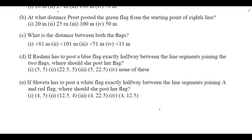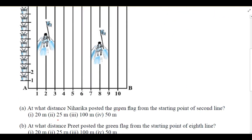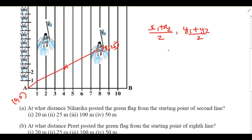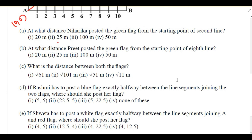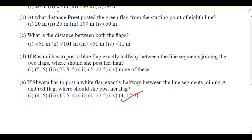Last question: if Sheda has to post a white flag exactly halfway between the line segment joining A and the red flag, where should she post it? The red flag is posted by Pre at (8, 25). The coordinate of A is (0, 0). Using the midpoint formula: x = (0+8)/2 = 4, y = (25+0)/2 = 12.5. So Sheda should post her flag at (4, 12.5).